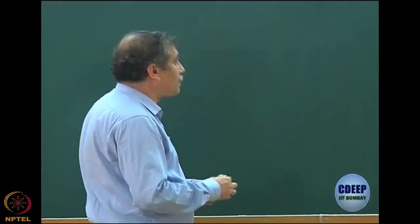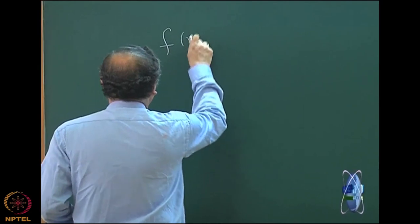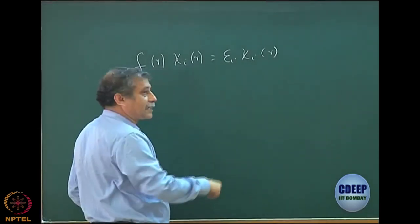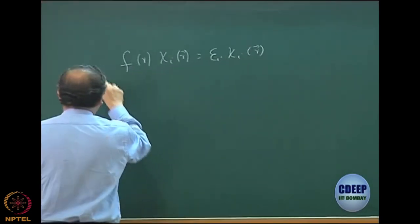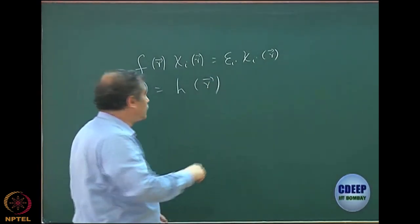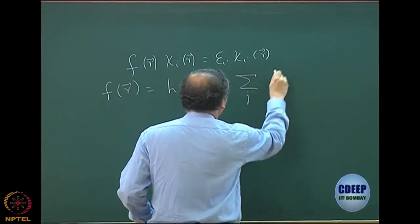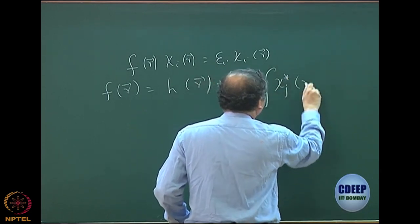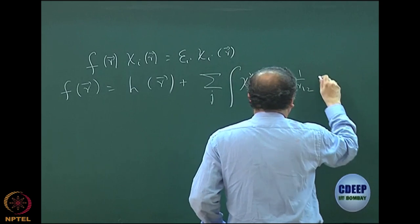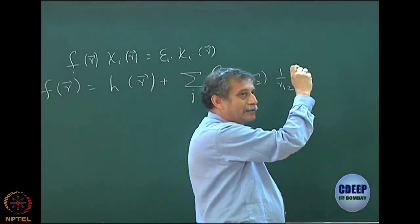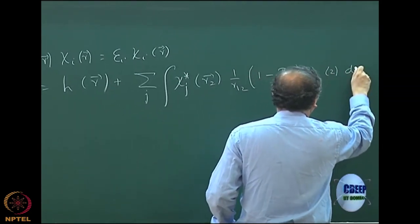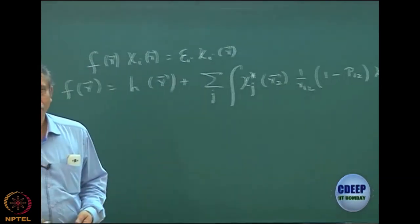Going back from the beginning: you had the canonical Hartree-Fock equation which gives the spin orbitals. You had expressions for f(r), which is the one-electron part, plus sum over j of chi_j*(r2) times (1/r12) times (1 minus P12) times chi_j(r2) d-tau. That was our first expression.